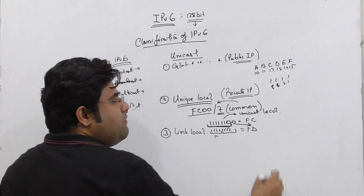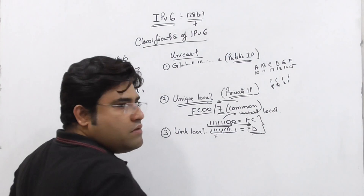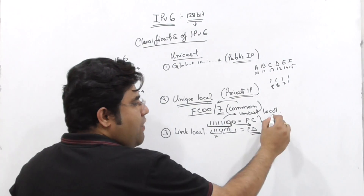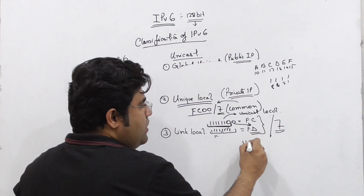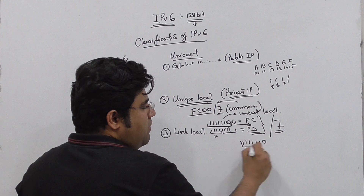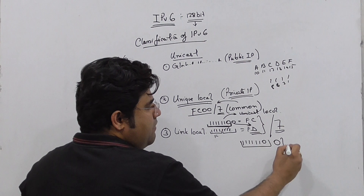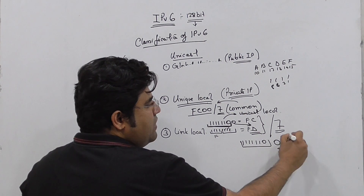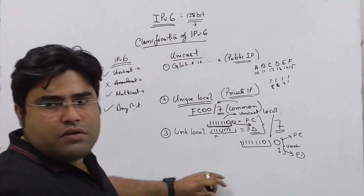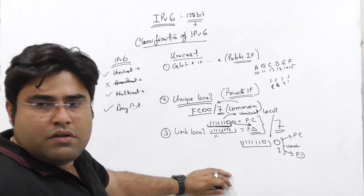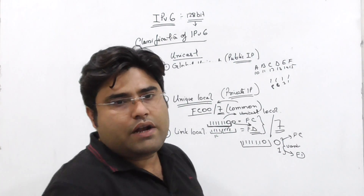Any hexadecimal value starting with FC or FD is a unique local address, where the first 7 bits are constant: 1, 2, 3, 4, 5, 6, 7. The variable bits give us FC and FD. These are unique local addresses.